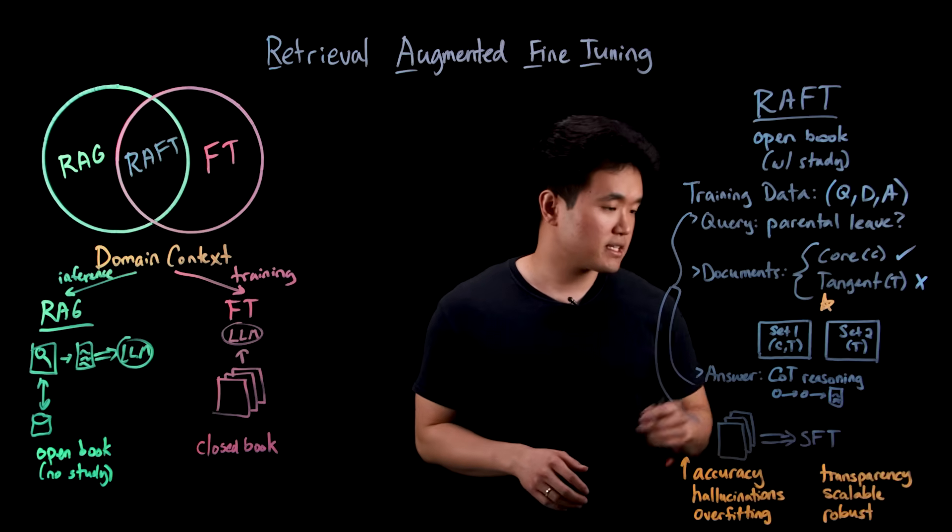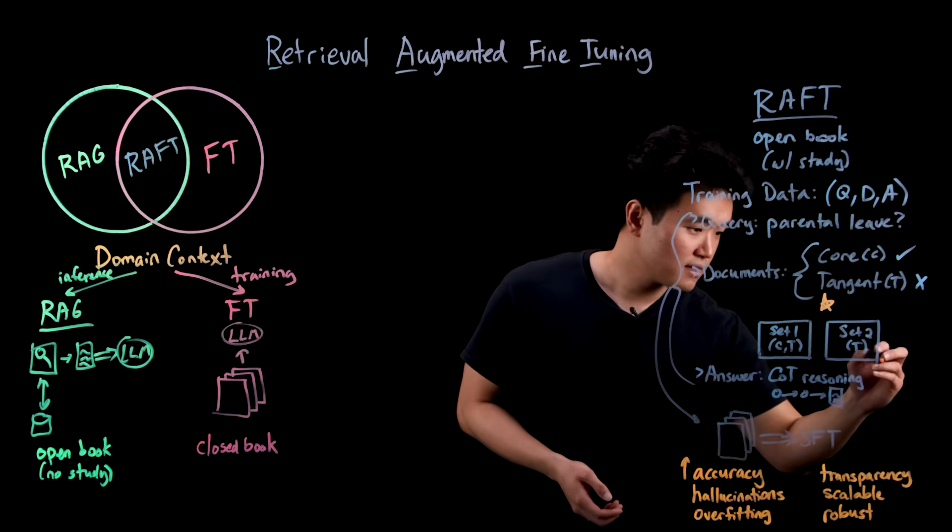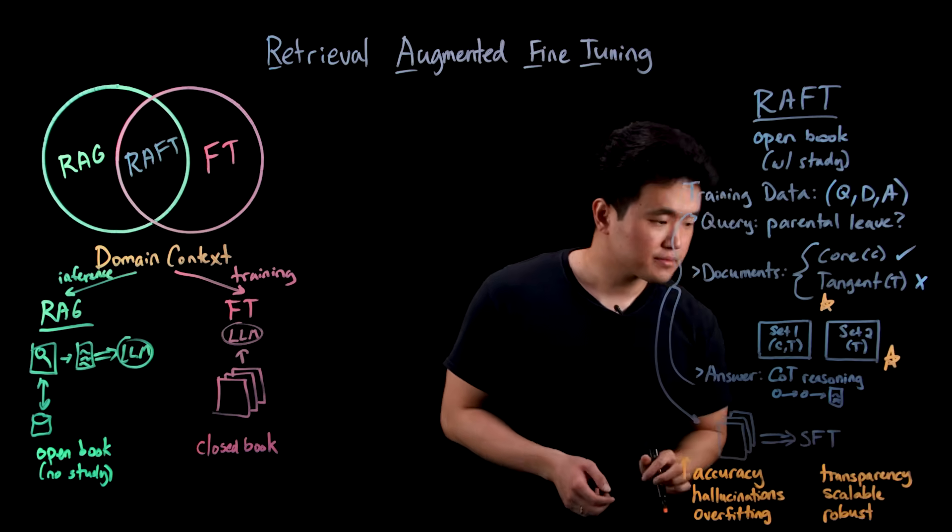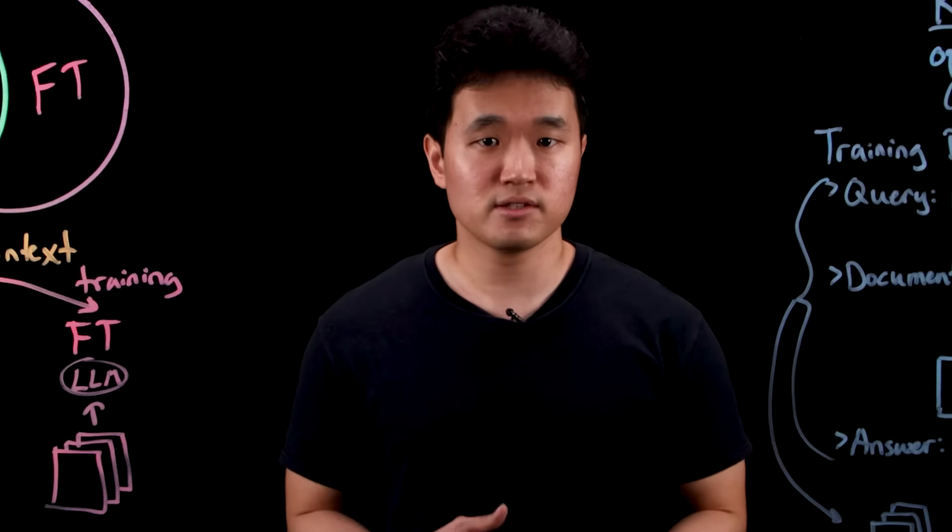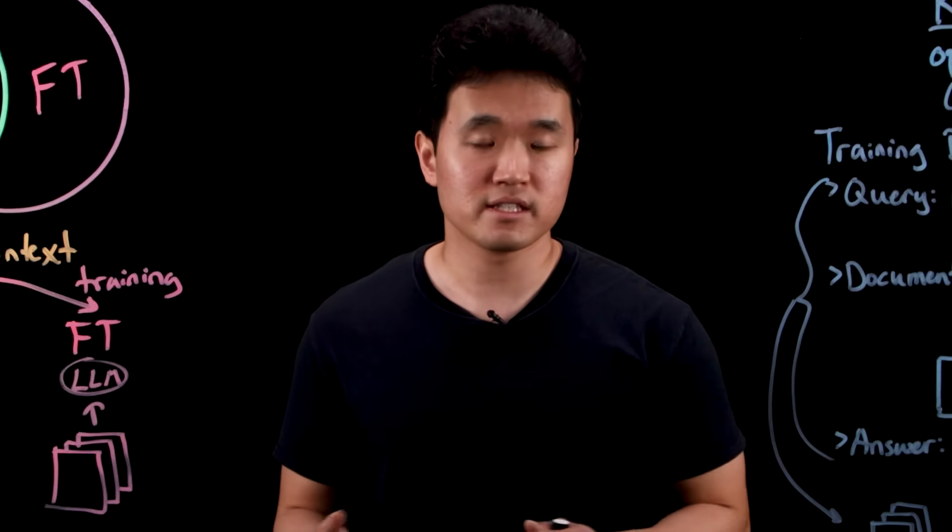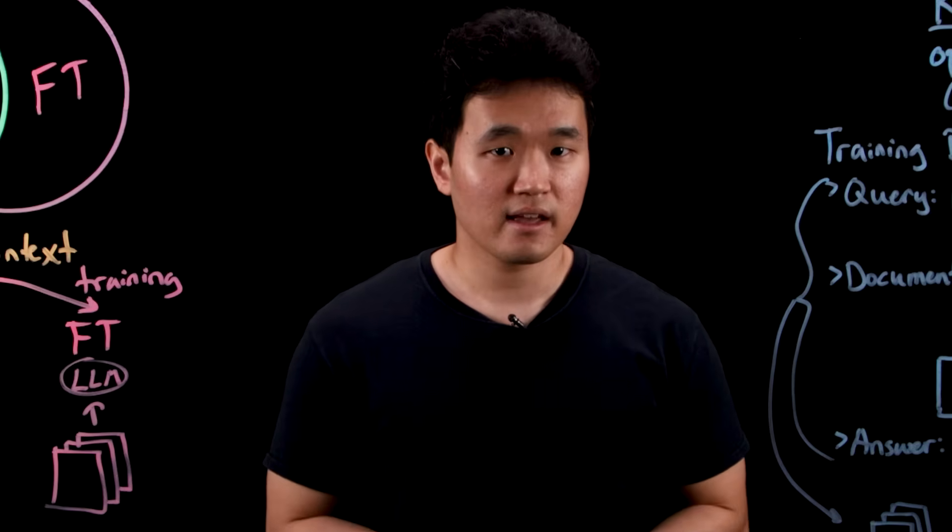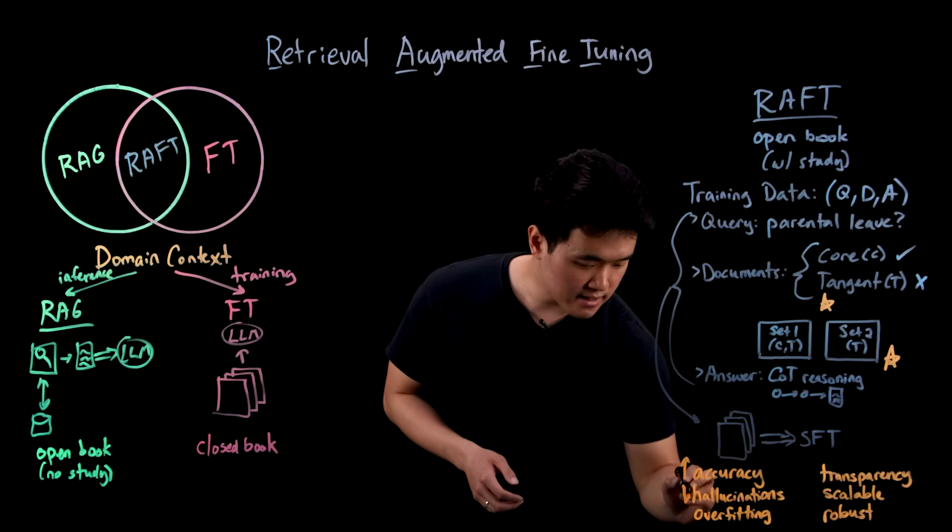Secondly, the creation of document sets that don't include any relevant documents at all, a.k.a. set two, help to teach the model when to rely on its intrinsic knowledge or to say I don't know, versus forcing an incorrect answer out of irrelevant RAG documents. This helps to minimize hallucinations.